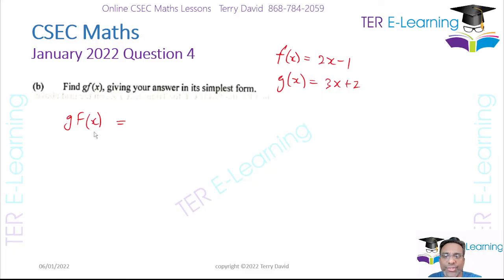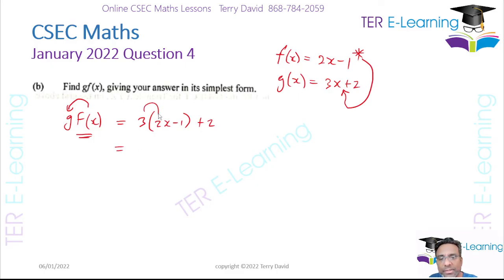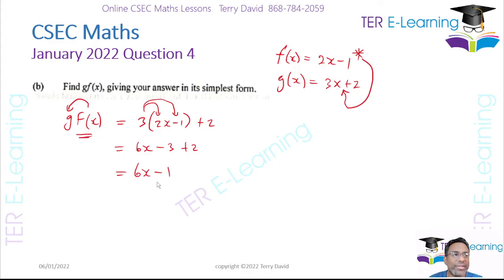To find gf(x), we take f(x) and plug it into g. f(x) = 2x − 1, so we substitute that as the value of x in g: g(2x − 1) = 3(2x − 1) + 2 = 6x − 3 + 2 = 6x − 1. So the composite function is 6x − 1.